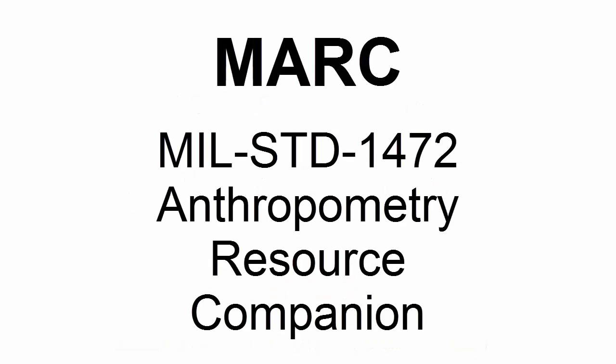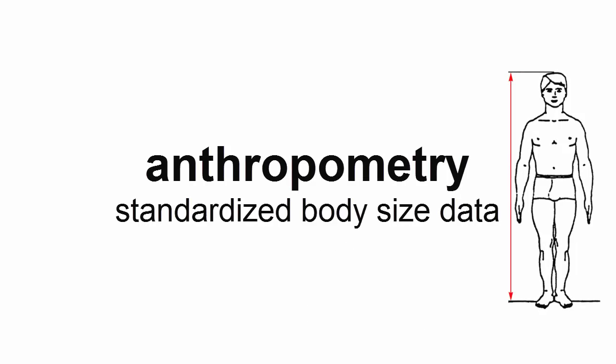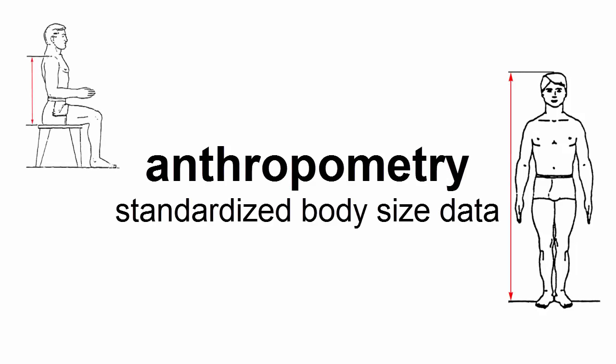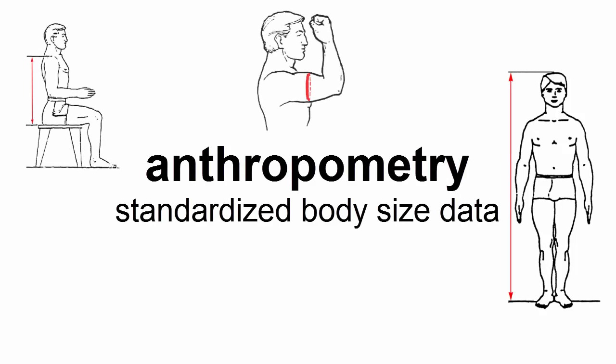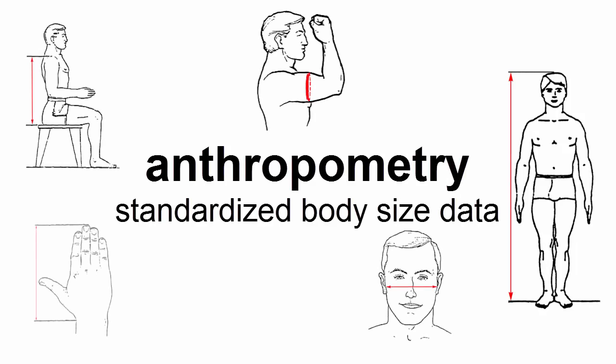The Mills Standard 1472 Anthropometry Resource Companion, or MARC, is a web app intended to provide a resource for accessing standardized body size data called anthropometry, guidance on applying the data, and tools that aid in collection and evaluation of such data as applied to the design of Army Materiel.